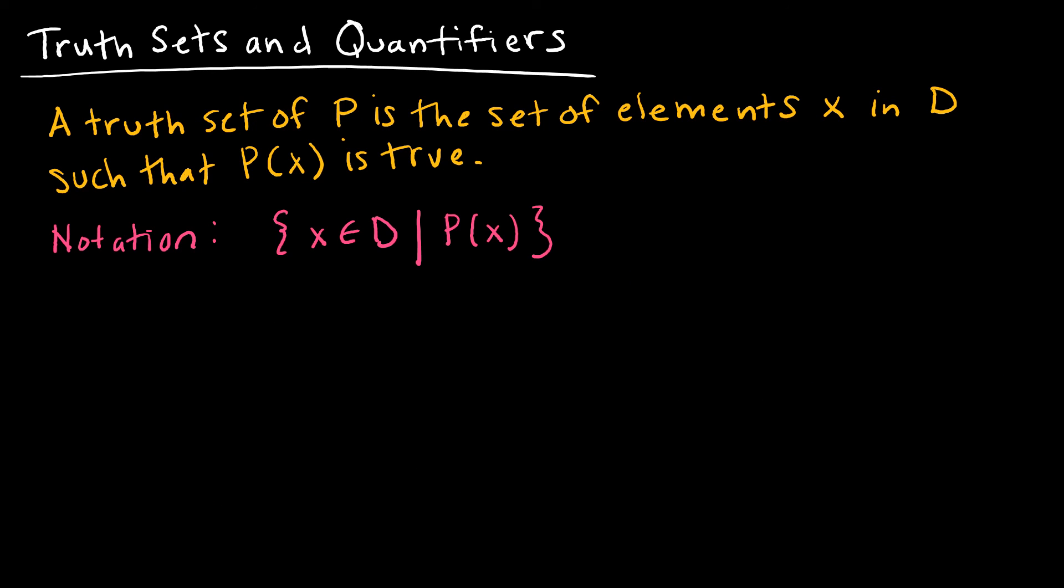Lastly, let's take a look at what is called a truth set. A truth set of P is the set of elements X in the domain such that P of X is true. So obviously this is some sort of propositional function, and we're saying the truth set is any values that make P of X true. So our notation says X is an element of D, D is obviously the domain, such that P of X is true. So let's say the domain here is the integers, and let's say P of X represents the statement that the absolute value of X is equal to 3.